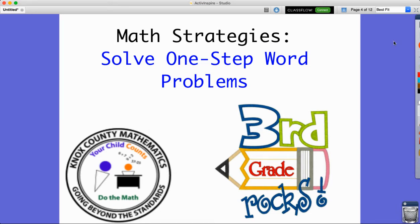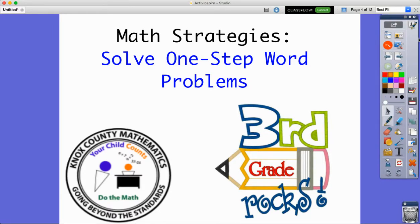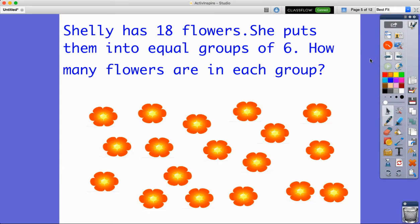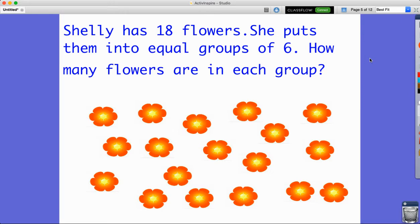Today's math strategy video is on solving one-step word problems with multiplication and division. Our first problem says Shelly has 18 flowers. She puts them into equal groups of six. How many flowers are in each group?